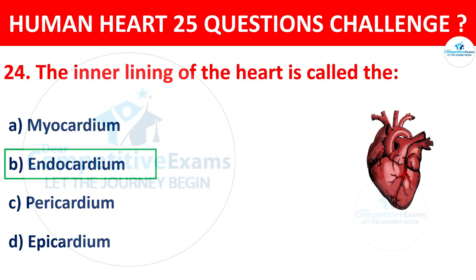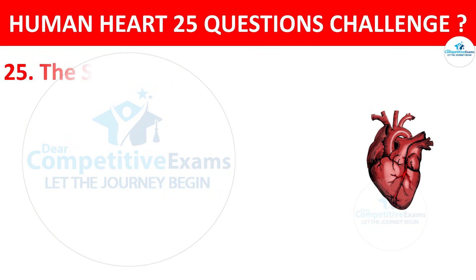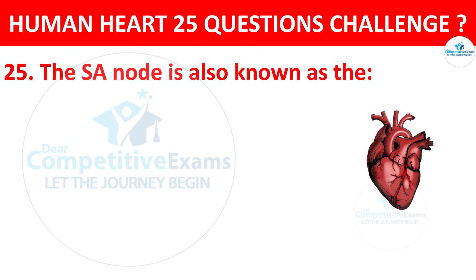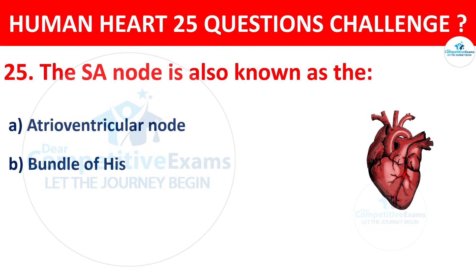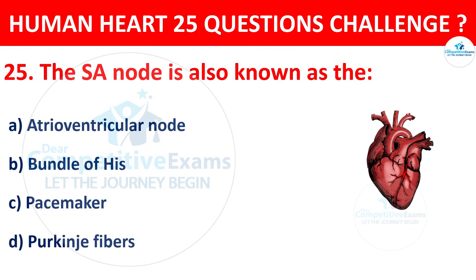Question number 25. The SA node is also known as? Options: Atrioventricular node, Bundle of His, Pacemaker, or Purkinje fibers. The correct answer is C, that is Pacemaker.